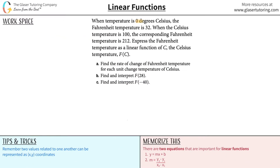When temperature is zero degrees Celsius, the Fahrenheit temperature is 32. When the Celsius temperature is 100, the corresponding Fahrenheit temperature is 212. Express the Fahrenheit temperature as a linear function of C, the Celsius temperature.